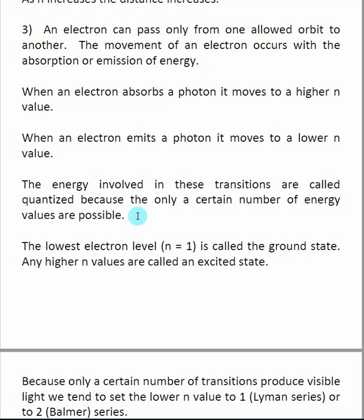Energy values are related to these stationary states, and there are only a certain number of transitions possible. Because of this, these transitions are called quantized — this is what we mean by quantum mechanics. I can only make a transition from, say, n=1 to n=2, or n=1 to n=3. I can't go from n=1 to n=3.5. There are only a limited number of specific transitions possible, and those transitions are defined for a specific element — beginning with the hydrogen atom, but other atoms have these transitions too.